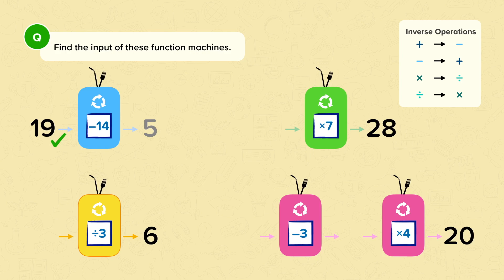Question 2. Something times 7 equals 28. If we have the 28 going in backwards, we need to do the inverse operation of multiplying by 7, which is dividing by 7. 28 divided by 7 is 4. So to check our answer, 4 times 7 is 28.